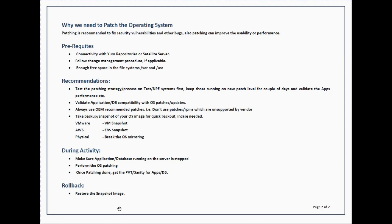If you are running Linux on a physical system and you have OS mirroring, break the mirror so you can back out to your secondary disk if required during the activity. The three simple steps are: first, make sure the application or database is not running on the system, because reboots will be needed and patching may introduce problems in your application or database.